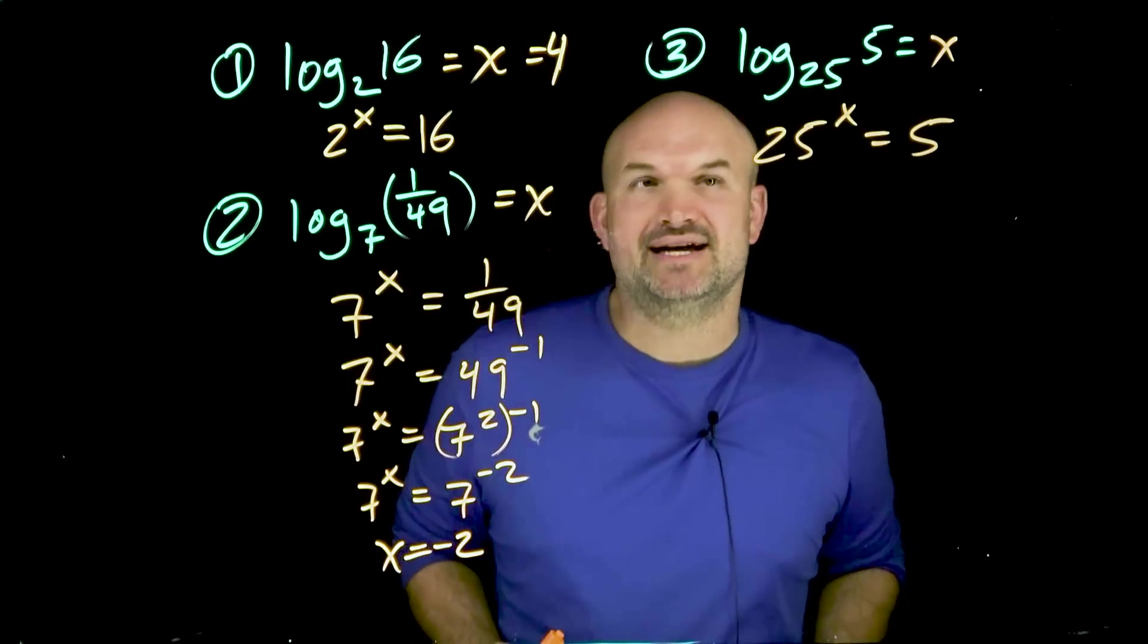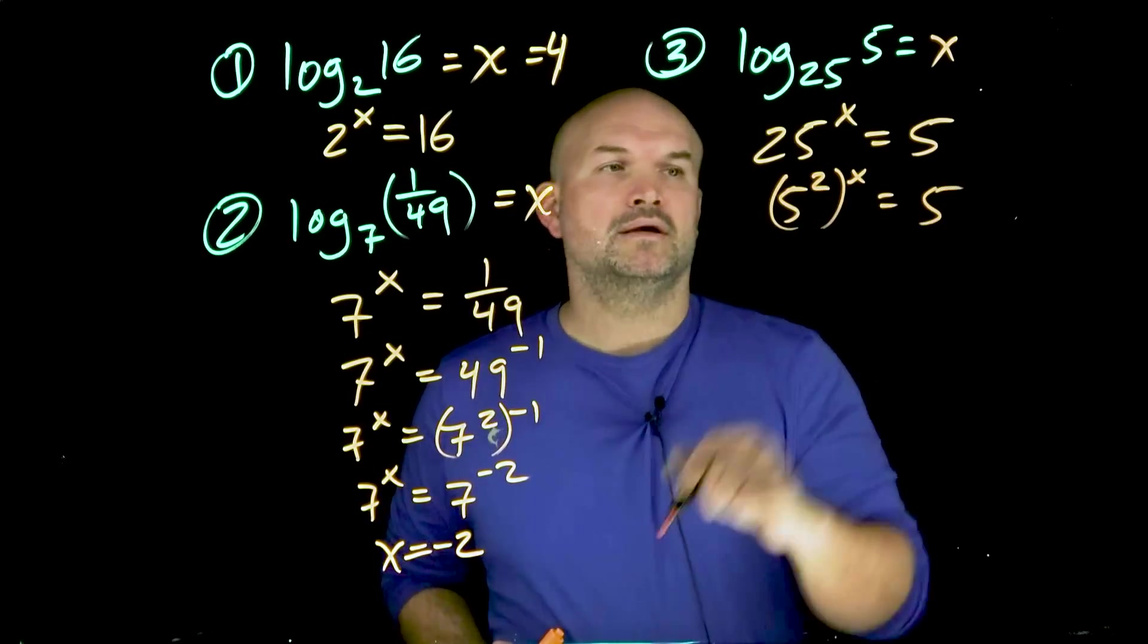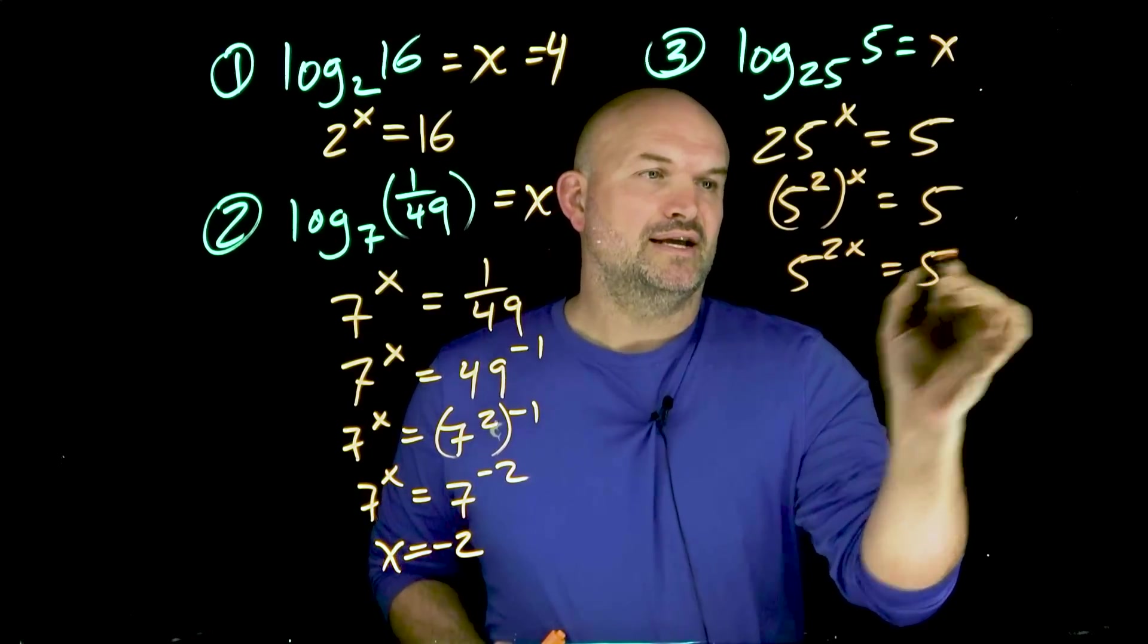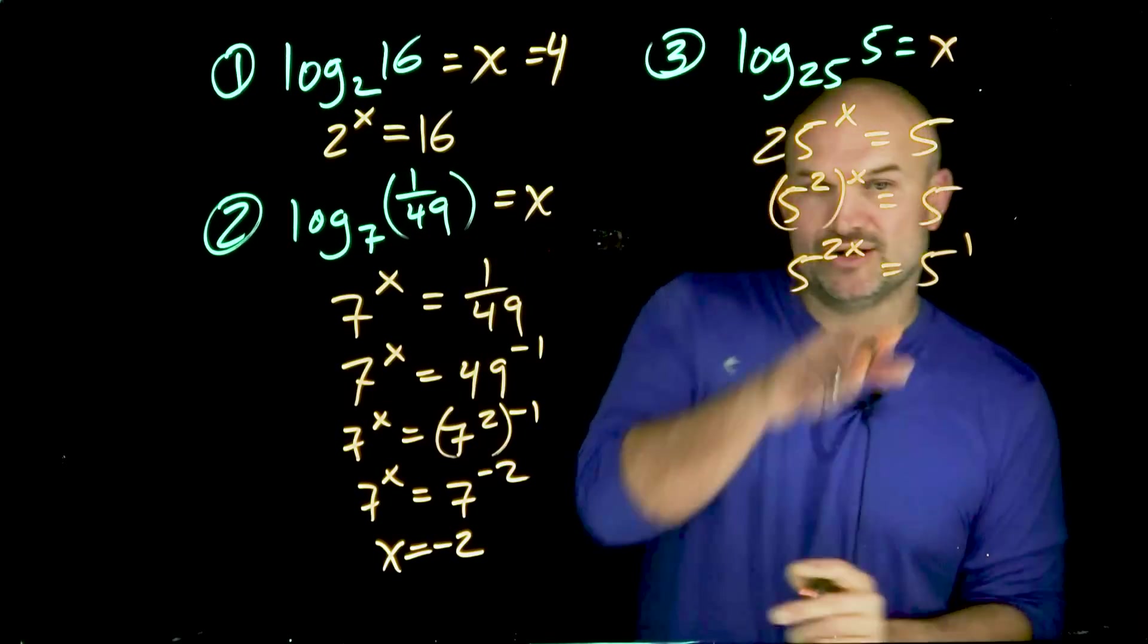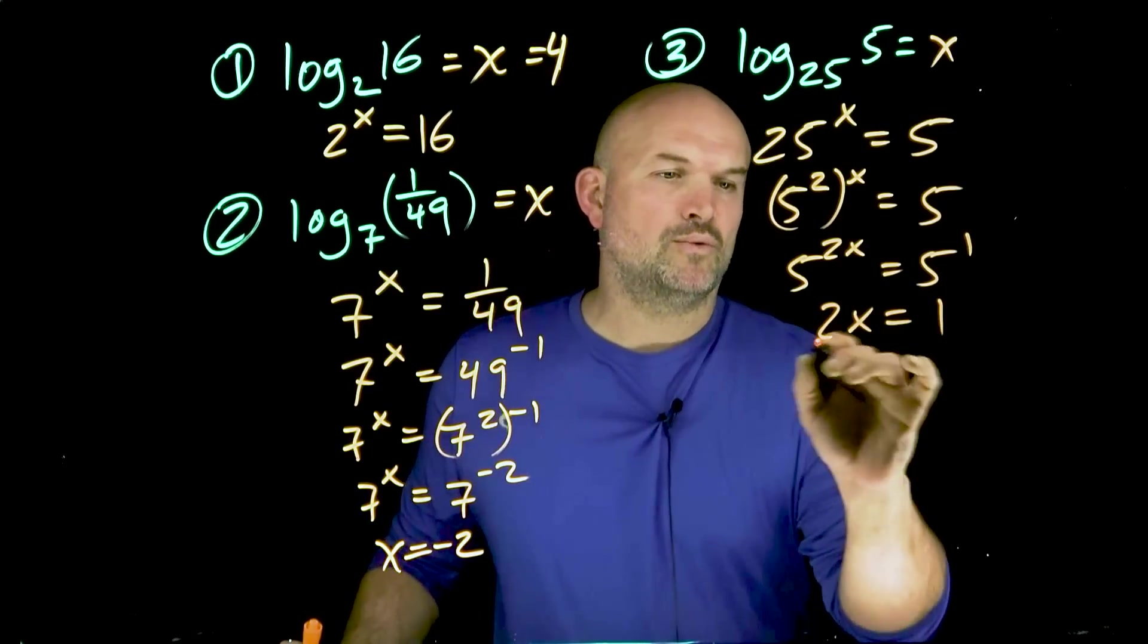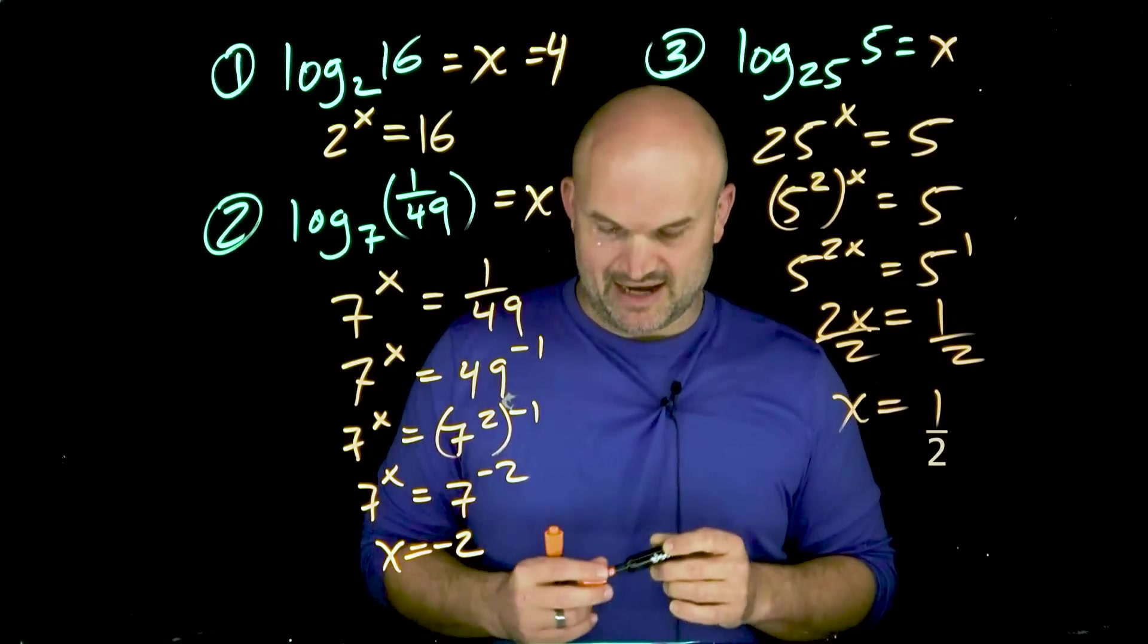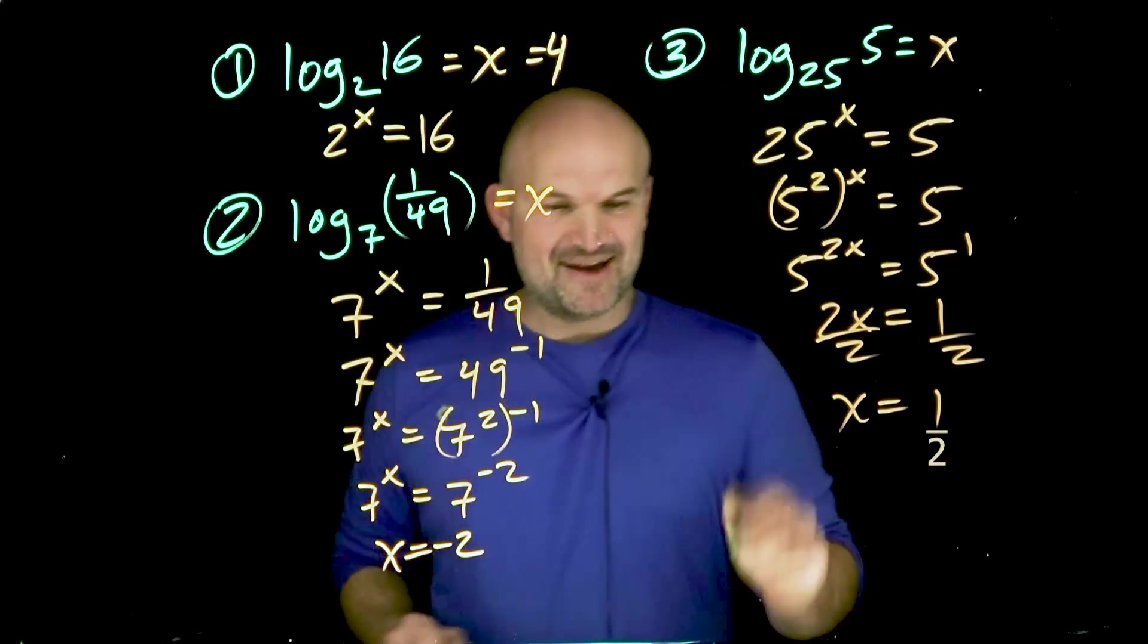However, I do recognize I can rewrite 25 as 5 squared. Now you can see that I can rewrite this as 5 to the 2x equals 5. So now utilizing my one-to-one property, notice I can rewrite that 5 as 5 raised to the first power. Therefore I have 2x equals 1, divided by 2, x is now equal to 1/2.